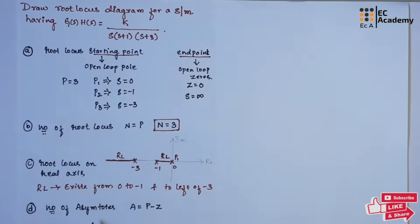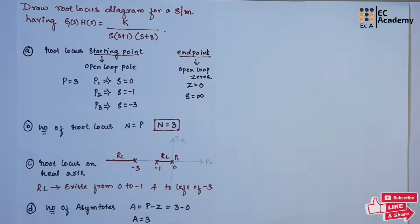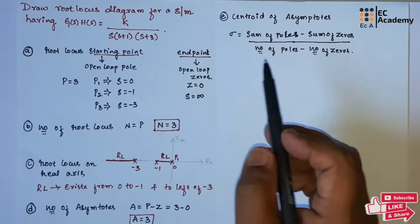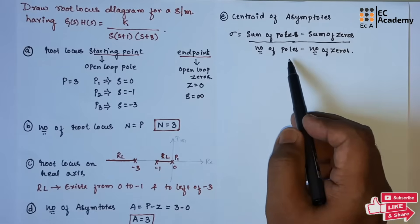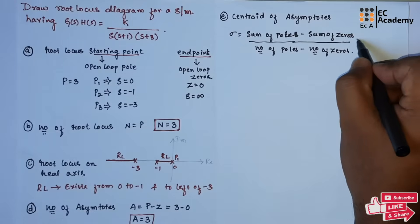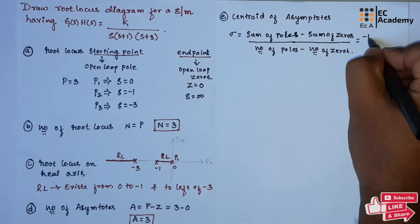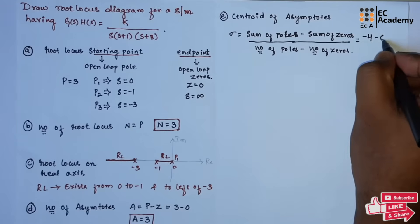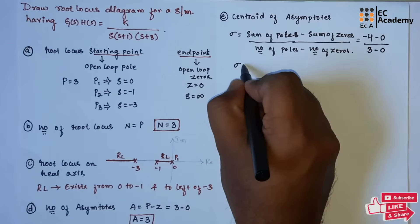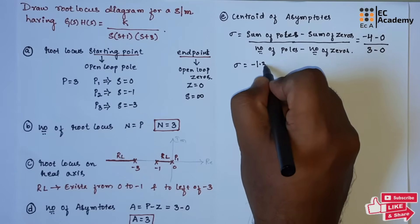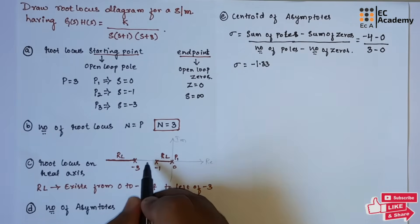Now we need to find the number of asymptotes, which equals poles minus zeros: 3 minus 0 equals 3 asymptotes. The center of asymptotes is given by the sum of poles minus sum of zeros, divided by the number of poles minus number of zeros. Sum of poles is -4, sum of zeros is 0, so the center of asymptotes equals -4 divided by 3, which is -1.33. On the S-plane, the center of asymptote is at -1.33.